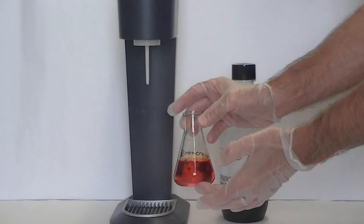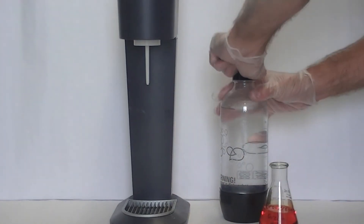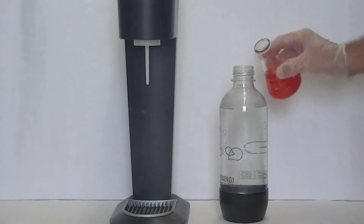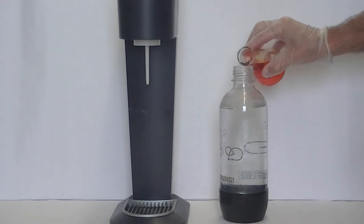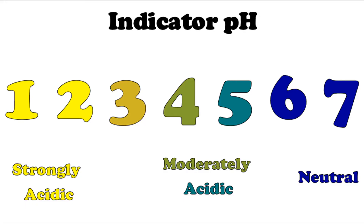Let's test to see if CO2 and water really do react to make an acid. To do so, I'll first take some of this water and add an acid-base indicator to it. The indicator we're using is yellow at low pH values, blue at the neutral pH of 7, and green in between. Notice that the lower the pH value, the more acidic the substance.